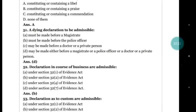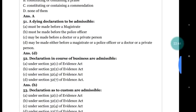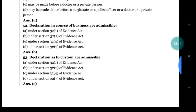Question number 51: a dying declaration to be admissible — (a) must be made before a magistrate; (b) must be made before a police officer; (c) may be made before a doctor or private person; (d) may be made either before a magistrate, police officer, doctor, or private person. The correct answer is (d) — that is definitely the correct answer.